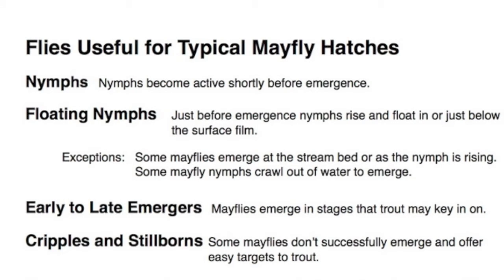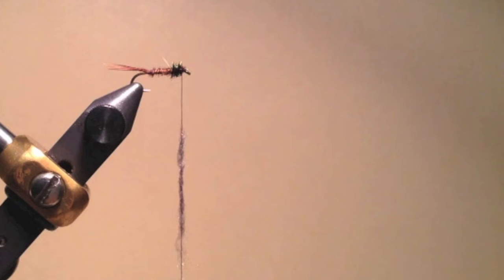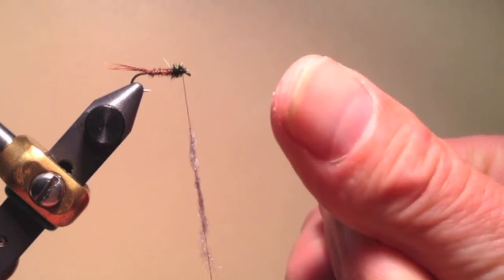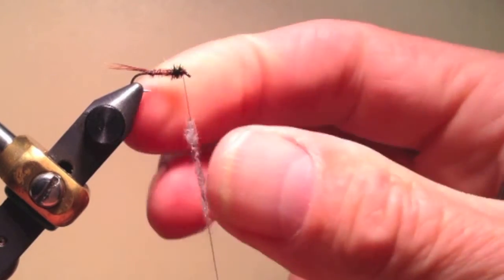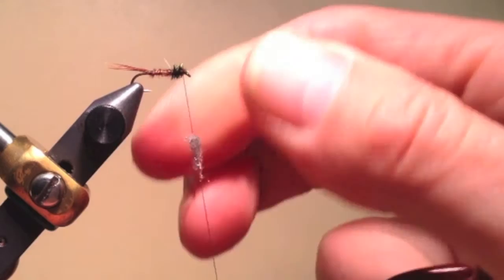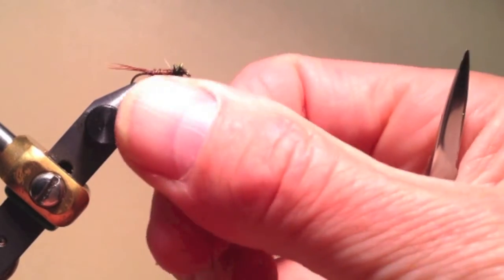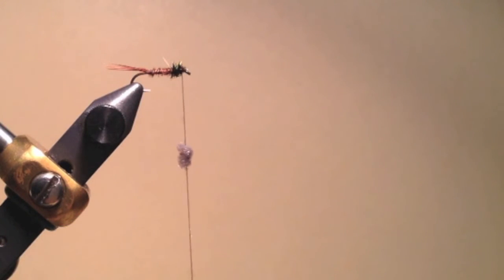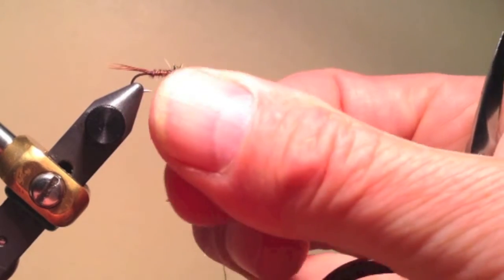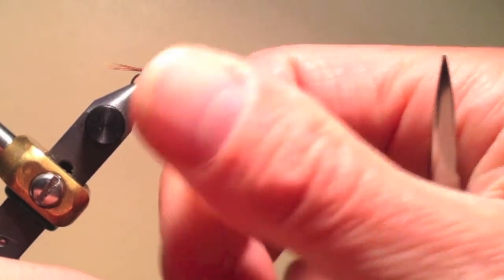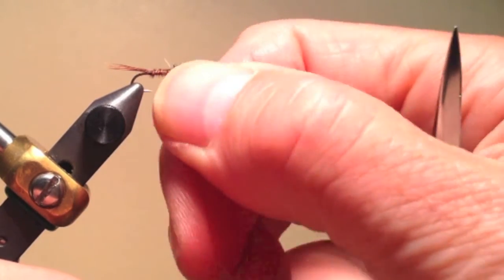The next fly is a floating nymph, which is an early stage emerger. To tie the floating nymph, you simply start exactly as you did with the pheasant tail nymph — tie on the tail, the body material, the rib, skip the flashabou, and put on a peacock herl thorax. Then add gray dry fly dubbing to the thread, apply it in the usual fashion first, and then use a vertical motion, which makes this into a ball of dubbing. If the ball is not the right size, you can take dubbing away or add more.